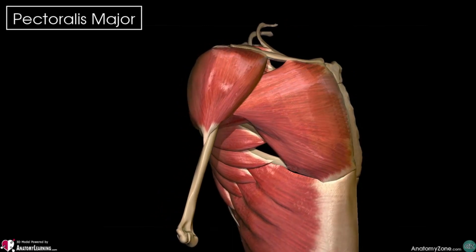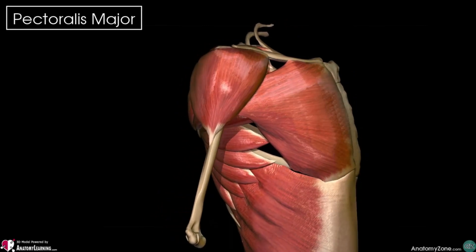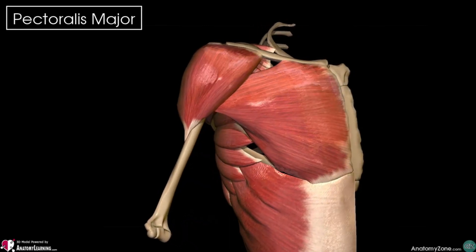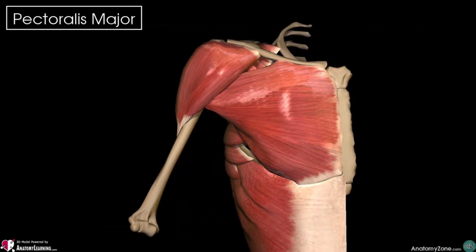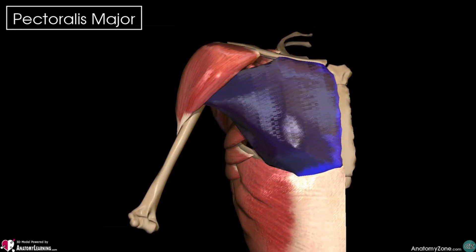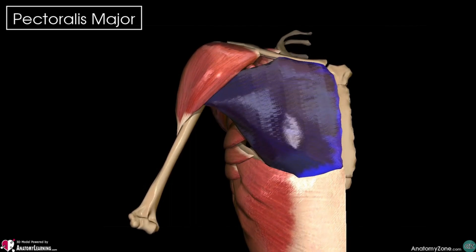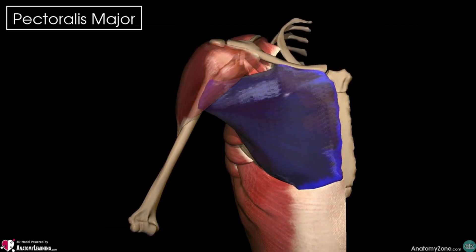The pectoralis major is a large band-shaped muscle which is located in the anterior of our thorax, and it forms the bottom of our chest. It's one of the most powerful muscles of the upper body.